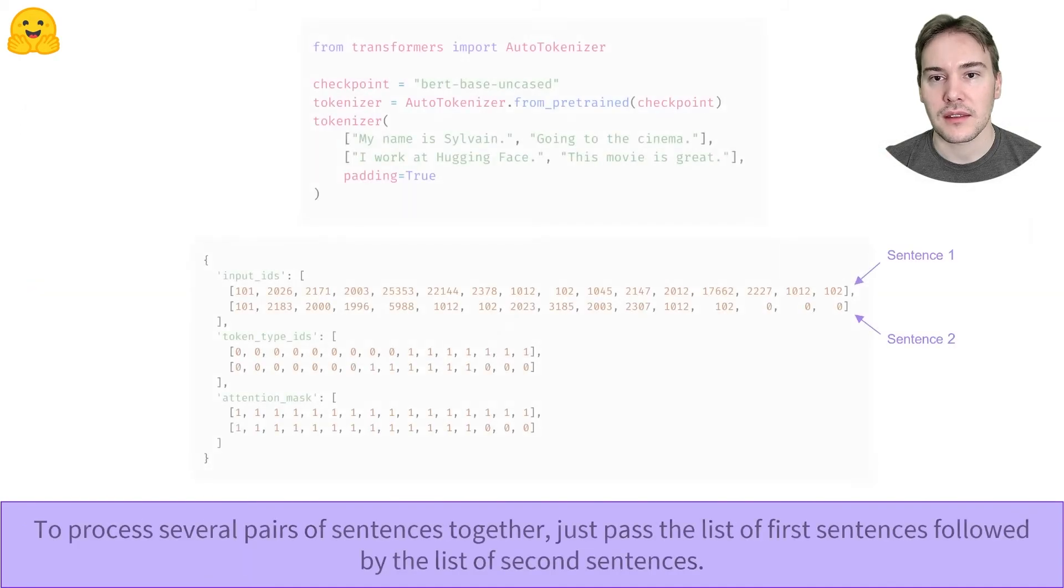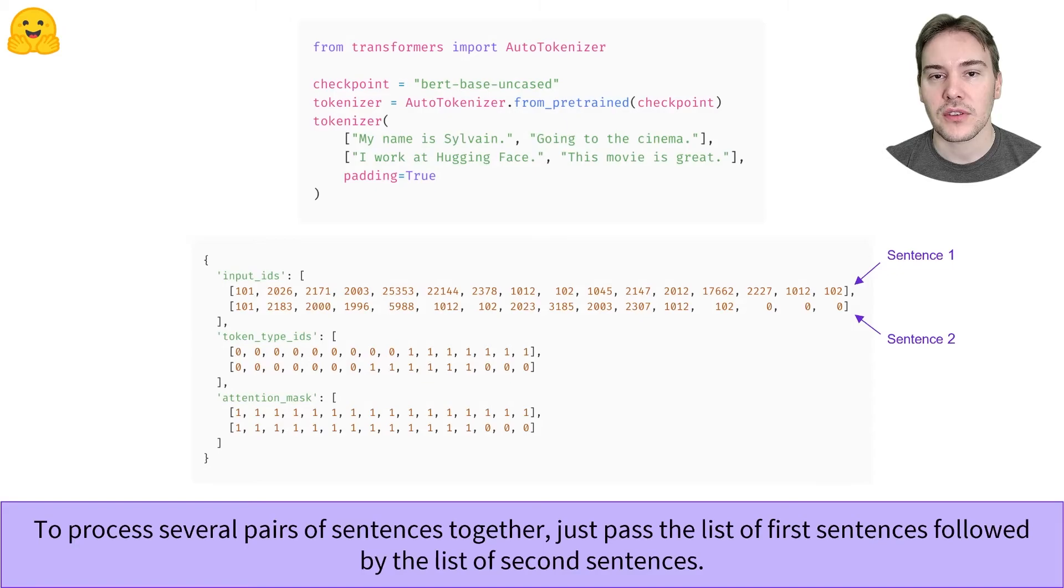If we have several pairs of sentences, we can tokenize them together by passing the list of first sentences, then the list of second sentences, and all the keyword arguments we studied already, like padding equals true.